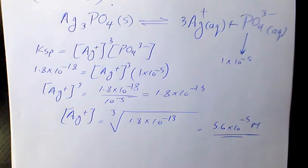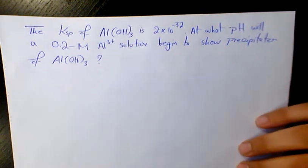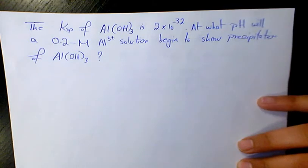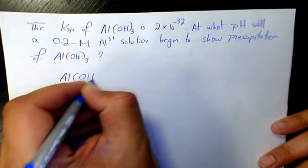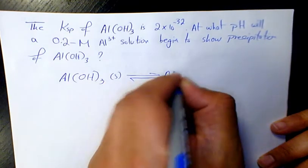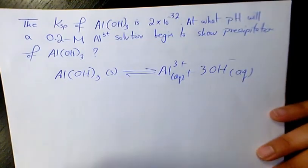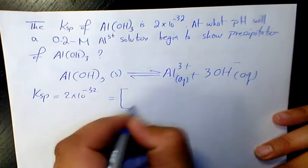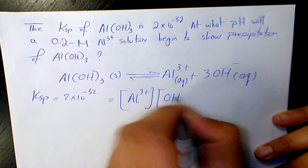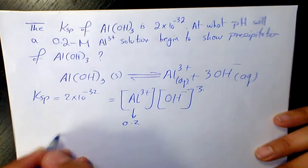Let's see the next example. The Ksp of Al(OH)₃ is 2×10⁻³² — at what pH will a 0.2 molar aluminum solution begin to show precipitation of aluminum hydroxide? Aluminum hydroxide in solid form when it dissolves is going to produce Al³⁺ plus three hydroxide ions, both in aqueous phase. The Ksp equals [Al³⁺] times [OH⁻]³, and the aluminum concentration given is 0.2.